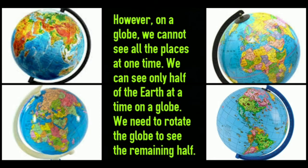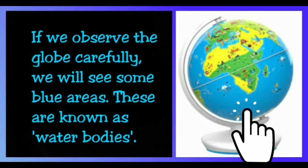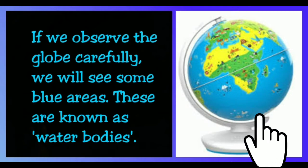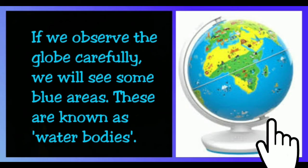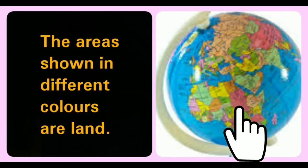We need to rotate the globe to see the remaining half and to see all the places. If we observe the globe carefully, we will see some blue areas, and these are known as water bodies. This blue color represents the water areas of our Earth. The areas shown in different colors are land.